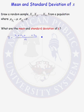Therefore, x-bar will have some distribution with some mean and some standard deviation. Under our current scenario, where we know the mean and the standard deviation of every random variable in our parent population, we can compute the mean and the standard deviation of x-bar.